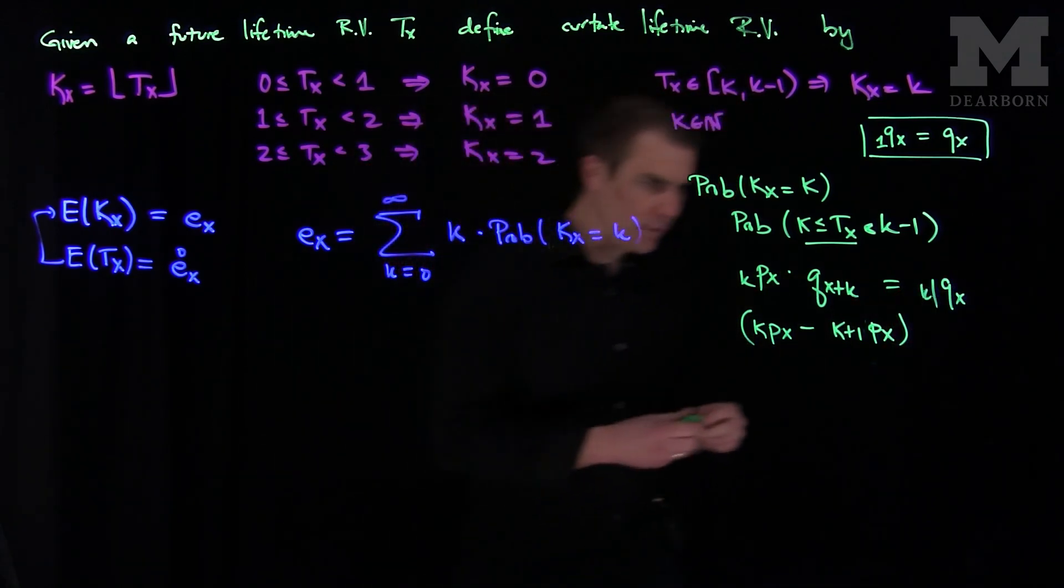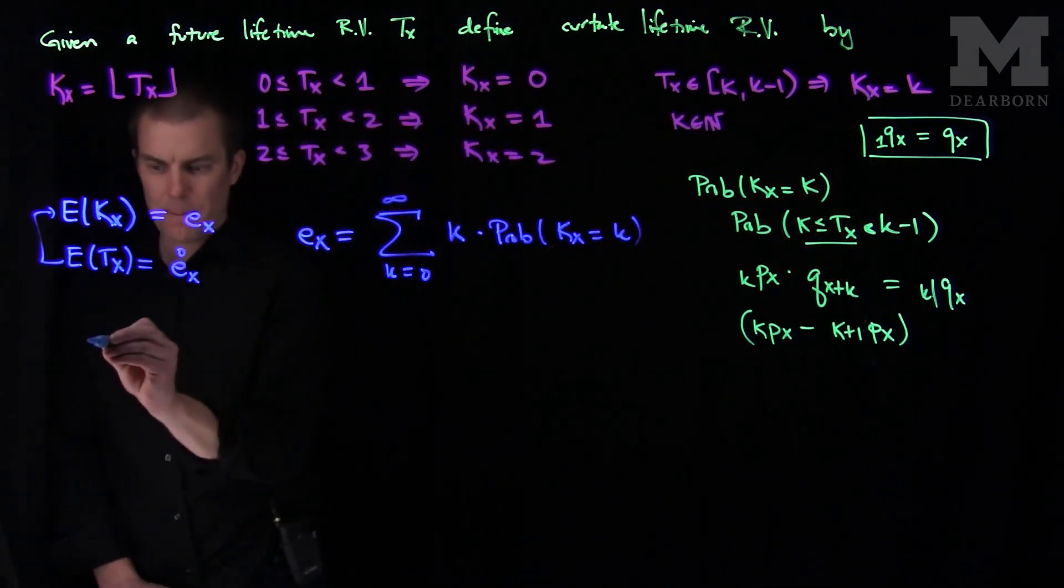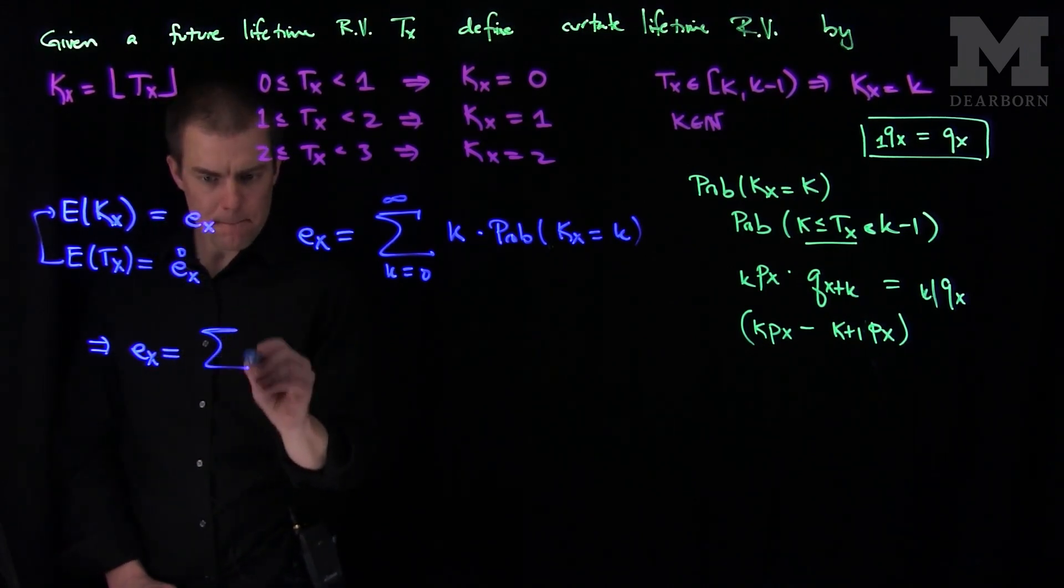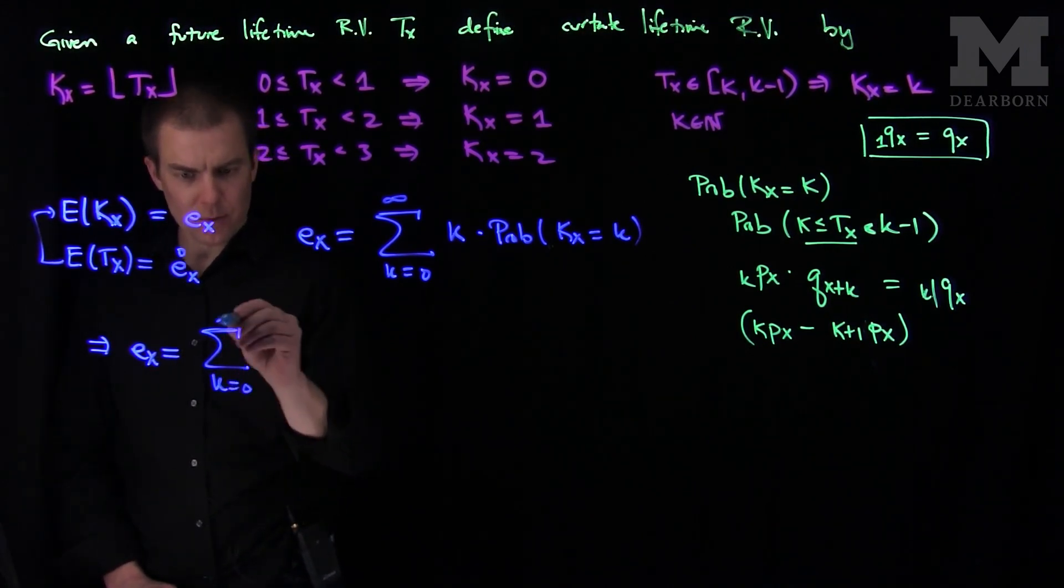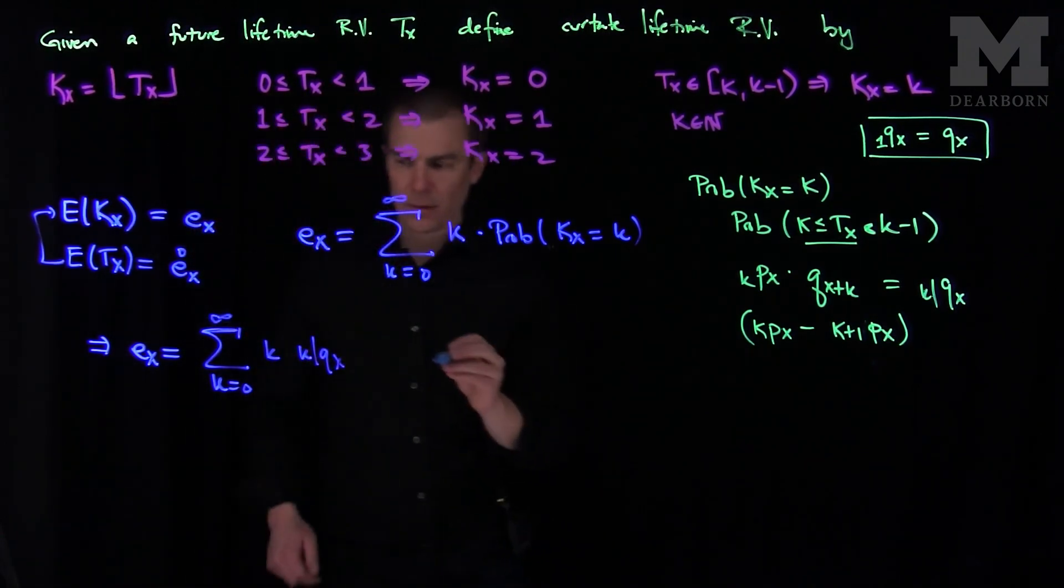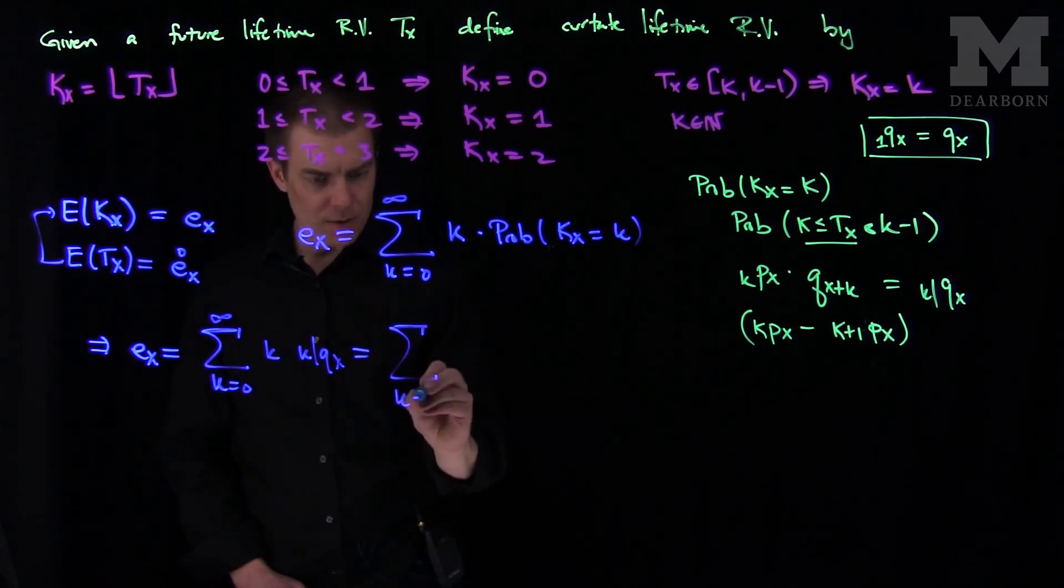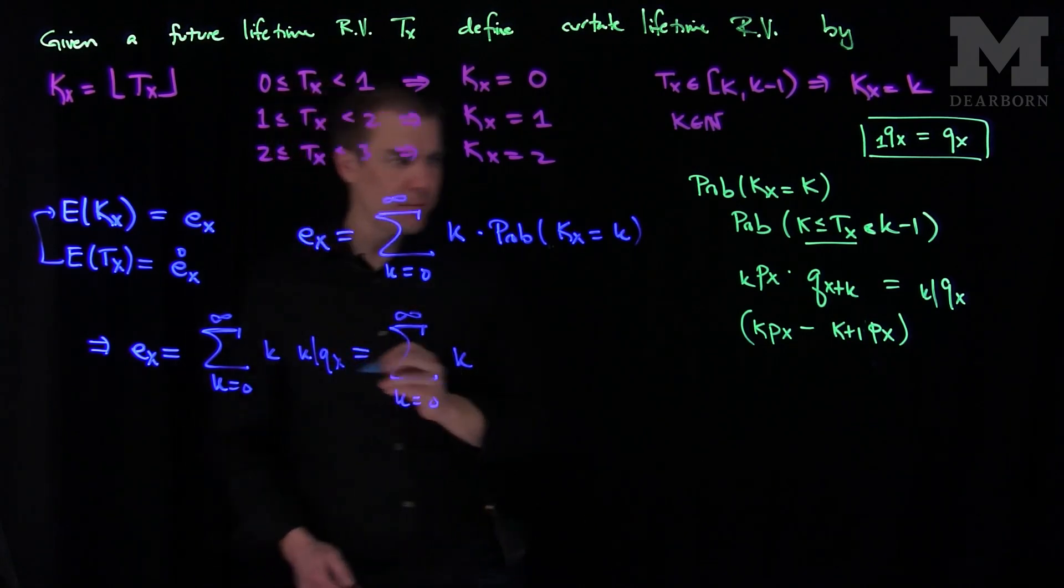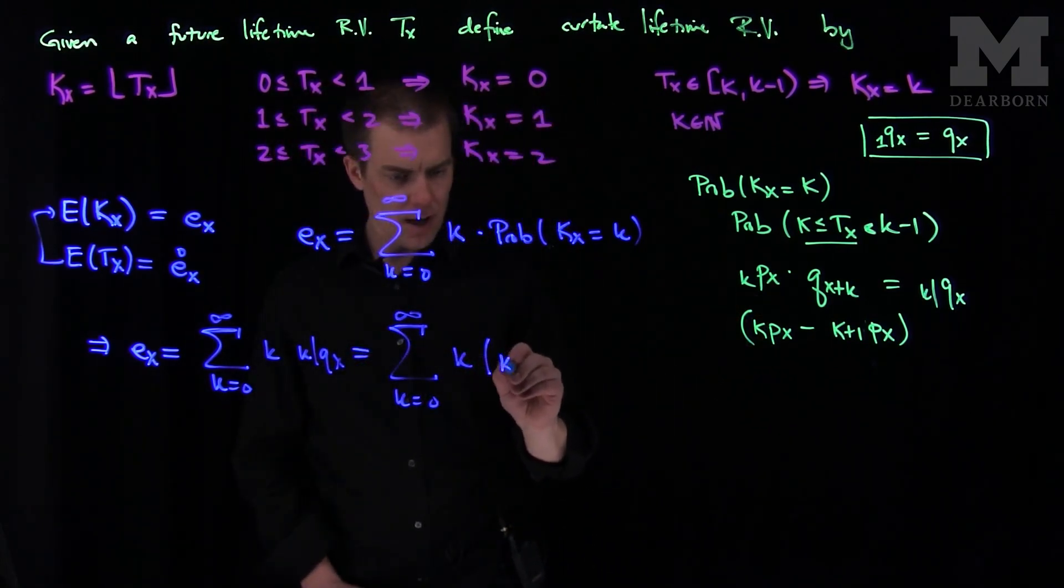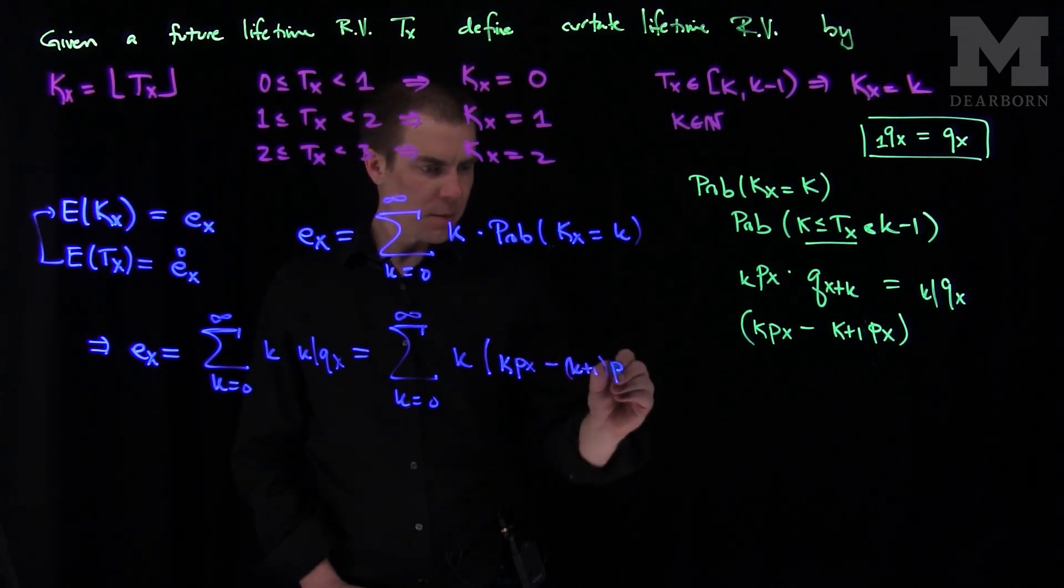We can write this expected value in the following way. We can write this expected value as the sum, e x is the sum, k goes from 0 to infinity of k and then k bar qx. And we can write this now as the sum, k goes from 0 to infinity of k, and then we'll use this formulation to get a nice formula: k px minus k plus 1 px.